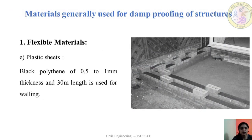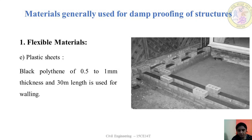The next material is plastic sheets. Plastic sheets are flexible in nature. Black plastic sheets, also called black polythene, are provided on the wall surface during construction for damp proofing. The thickness of black polythene is about 0.5 to 1 mm and the length is equal to that of the wall.